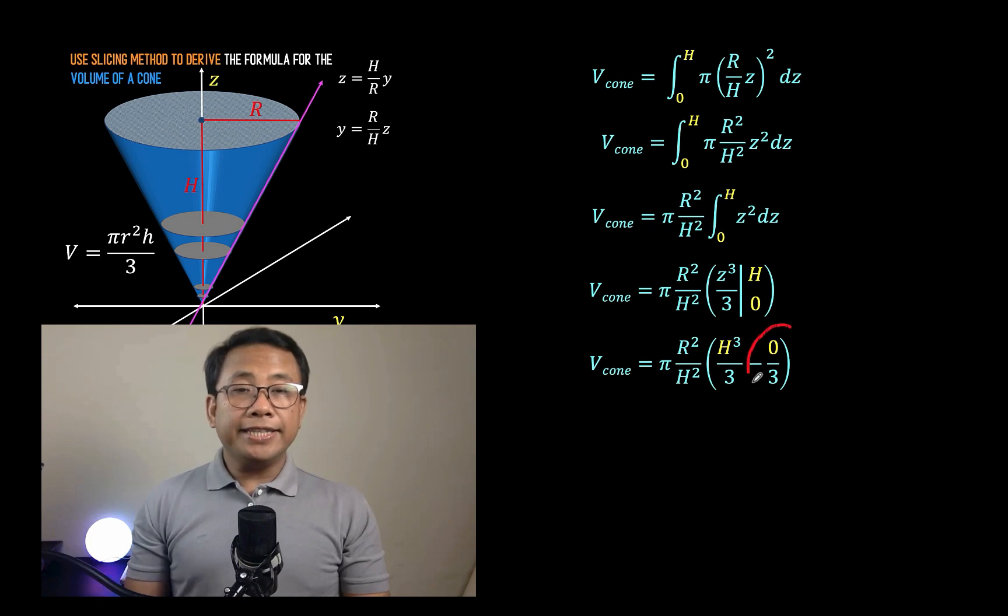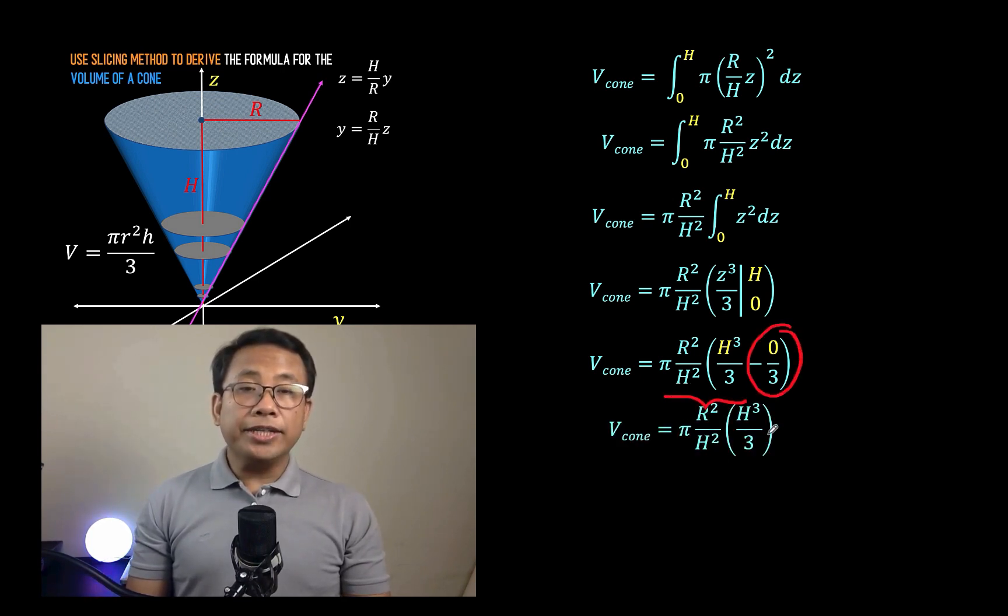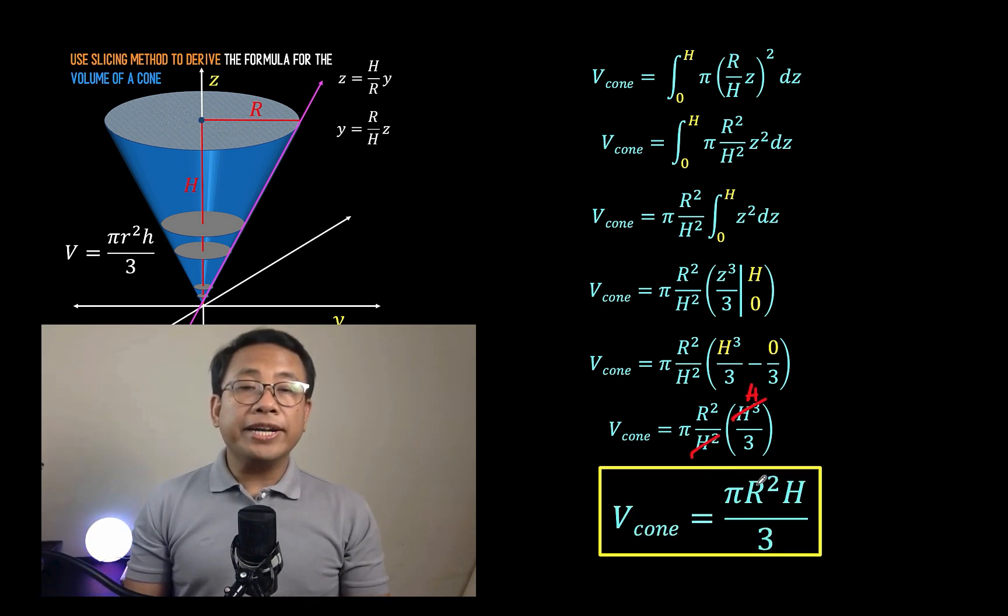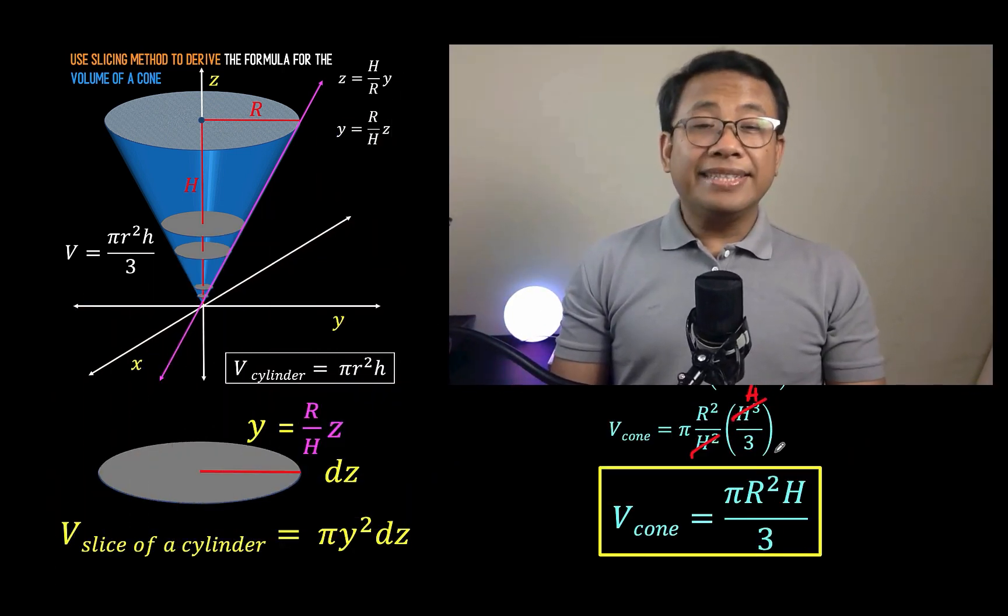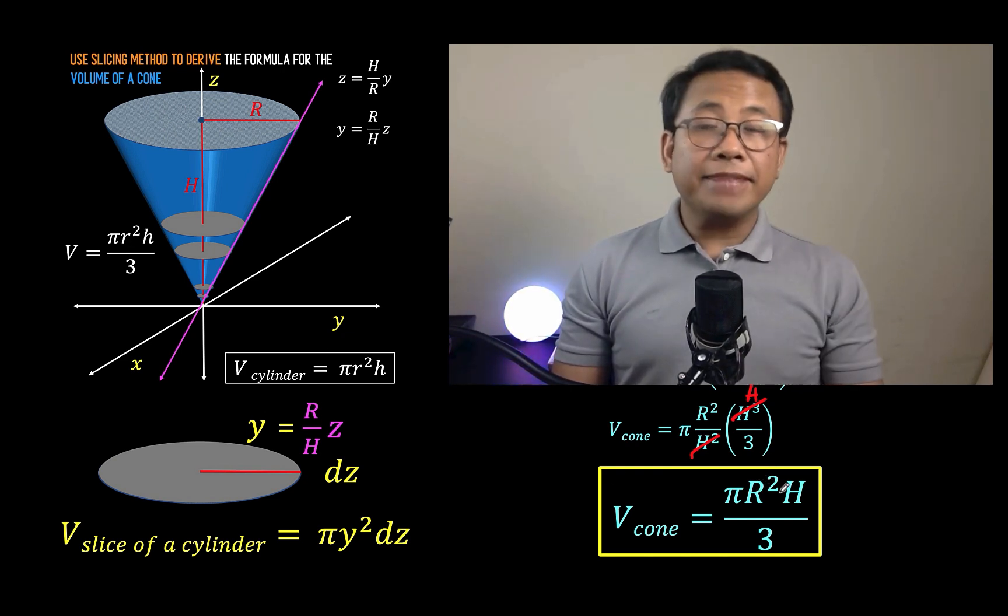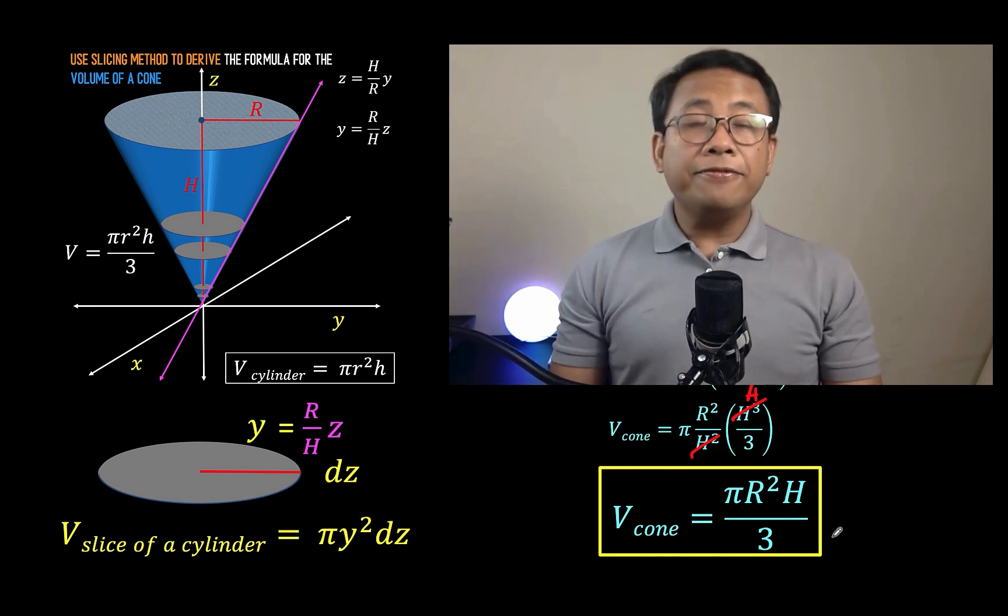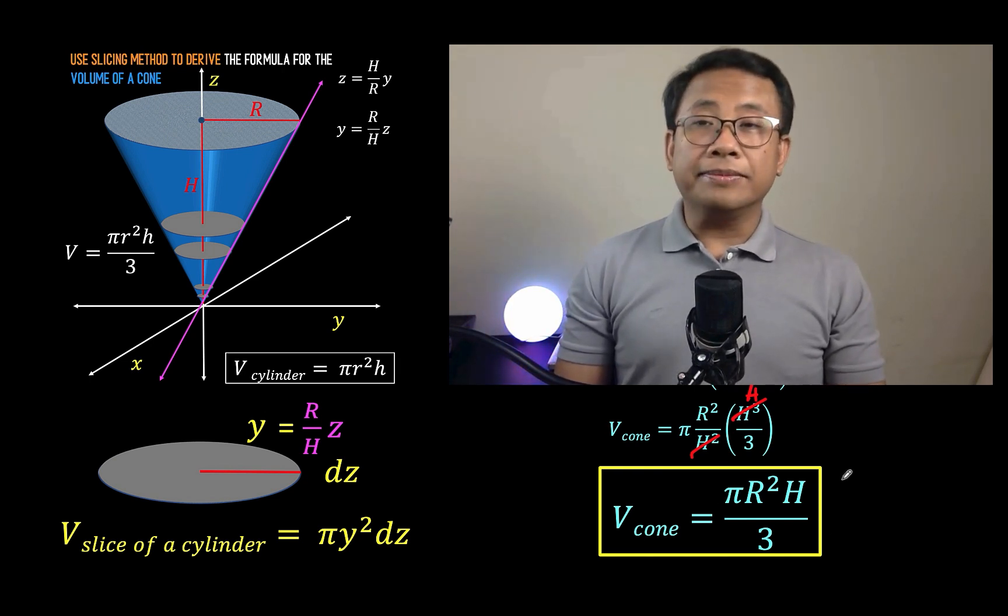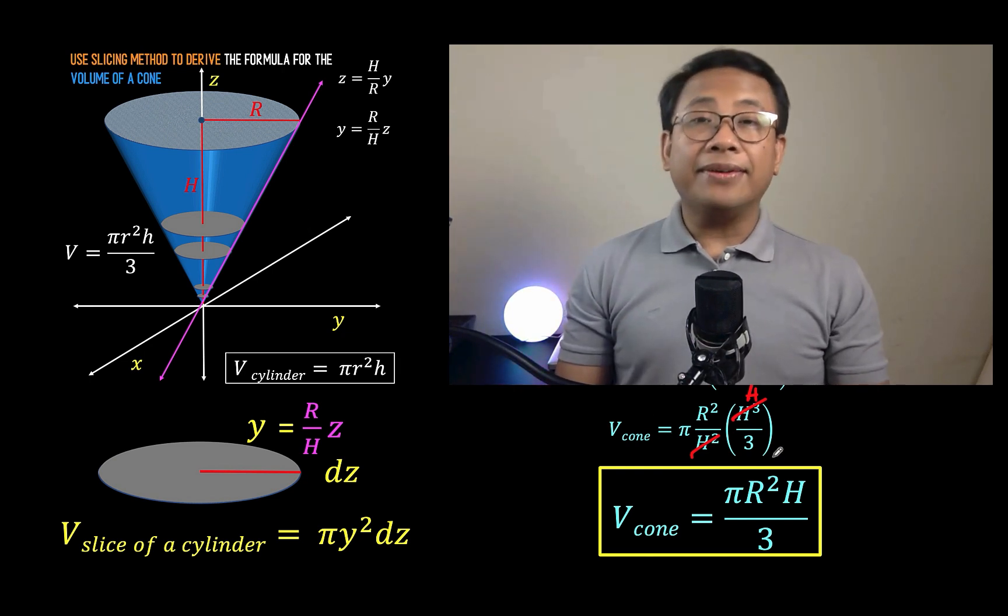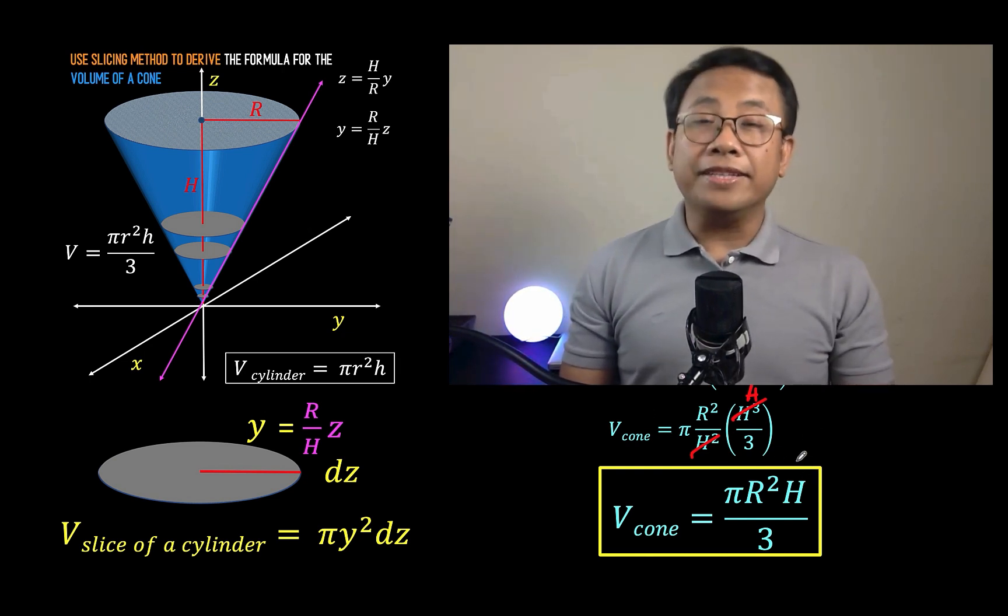This part here is just 0, so we only have π R² over H² times H³ over 3. Now H³ divided by H² is equal to H, so what's left is π R² H over 3. And generally, this capital R could be replaced by small r, and this H can be replaced by small h. And so we now have the formula for the volume of the cone. We derived this using the slicing method, and so this is now the answer to our question at the beginning of this video.